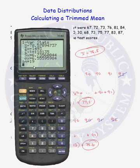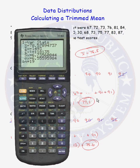The calculator can be helpful in calculating means and trimmed means by putting the data into a list, sorting it, and then deleting the correct number of values from the low end and the high end of the data set.